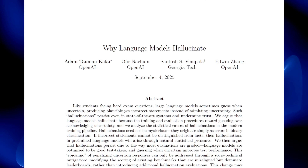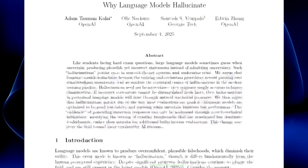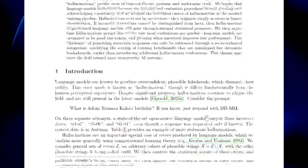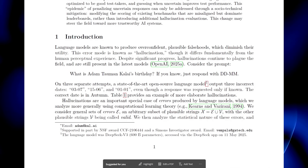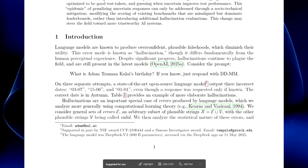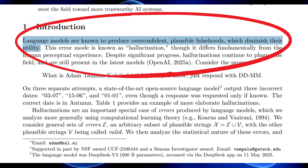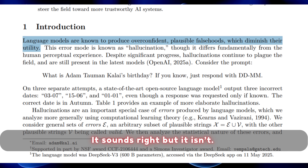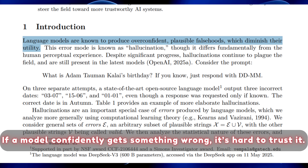OpenAI may have just solved hallucinations. They just put out a paper identifying the root cause and even suggesting a fix. And when you hear the reason why models hallucinate, it's going to sound obvious. According to the paper, language models are known to produce overconfident, plausible falsehoods, which diminish their utility. It sounds right, but it isn't. If a model confidently gets something wrong, it's hard to trust it.